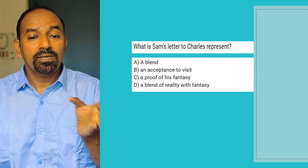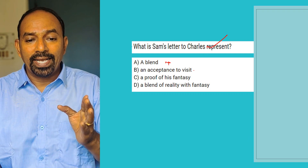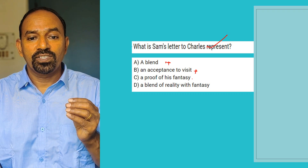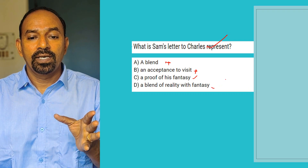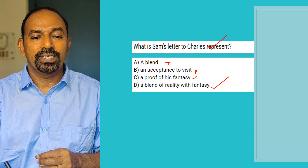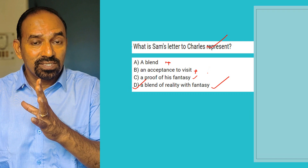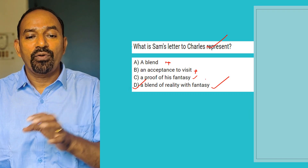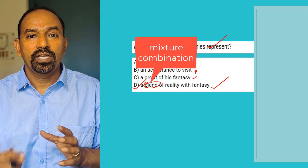Next question: What does Sam's letter to Charlie represent? Options: a blend; an acceptance to visit; a proof of his fantasy; a blend of reality with fantasy. Sam's letter to Charlie represents a blend of reality with fantasy — that is, a mixture of reality and fantasy. That is the right option.